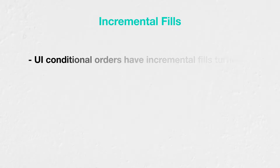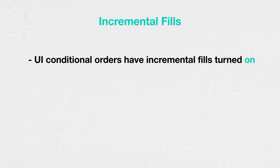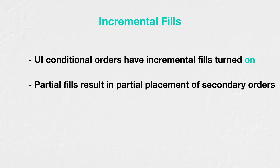Conditional orders placed via the user interface have incremental fills turned on. This is a setting that means when the primary order receives only a partial fill, a proportional amount of the secondary orders will then be placed. For example, imagine we have an order to buy $100 of the Bitcoin Perpetual, with a conditional take-profit and stop-loss of the same size attached. If $20 of the primary order is filled, then $20 of the secondary orders will be placed. The remainder will still be waiting for the rest of the primary order to be filled.